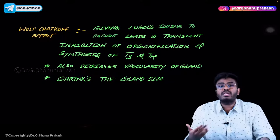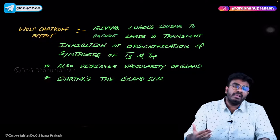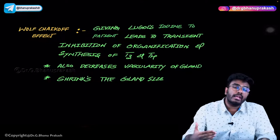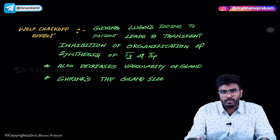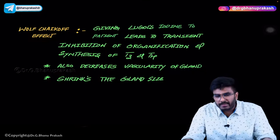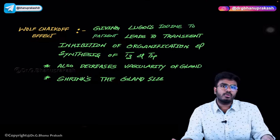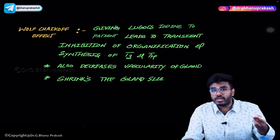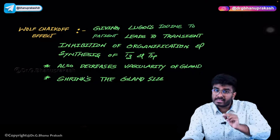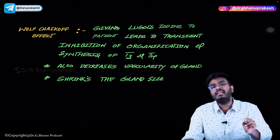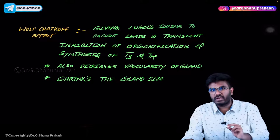Whenever you give too much iodine at a time, excessive iodine will inhibit thyroid hormone synthesis — just like excessive money will make you lazy. Excessive amounts of iodine at once will inhibit thyroid hormone production. Normal iodine gives normal T3/T4 production; excessive iodine intake decreases T3/T4 production. That effect is called the Wolff-Chaikoff effect.